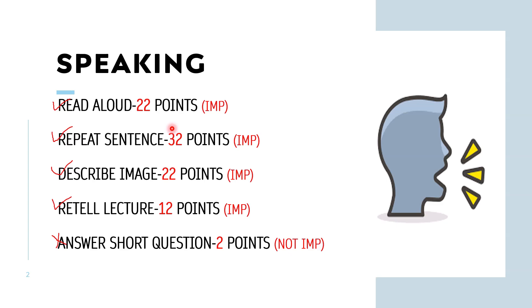Read Aloud is the most important task of the speaking section because it contributes 22 points — divided into content, pronunciation, and fluency. Some students get confused about whether content is important. If your English is good and you can speak every word clearly and fluently, then there is no need to skip content. But if you are facing difficulty pronouncing some words, you can skip the content, because only the content part contributes to the reading section. Try your hundred percent because this is the easiest task.